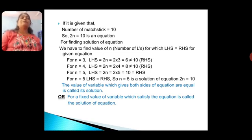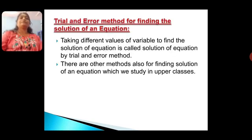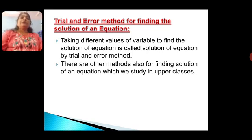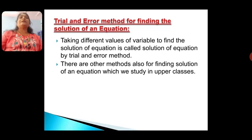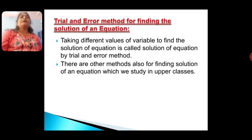So students, the value of the variable which makes both sides of the equation equal is called its solution. That means, a fixed value of the variable which satisfies the equation is called the solution of the equation. We can find the solution of an equation by the trial and error method — taking different values of the variable to find the solution is called the trial and error method. We take different values of the variable and check whether both sides of the equation are equal or not; the value for which both sides are equal is the solution. There are other methods also for finding the solution of an equation, which we will study in higher classes.